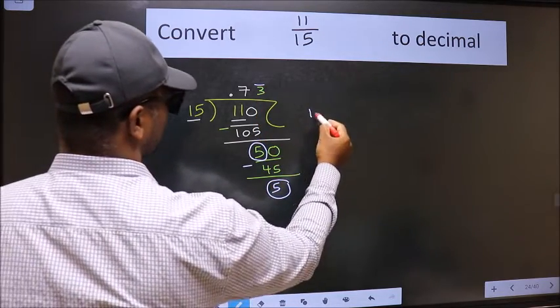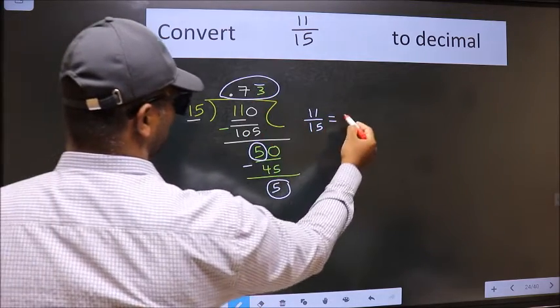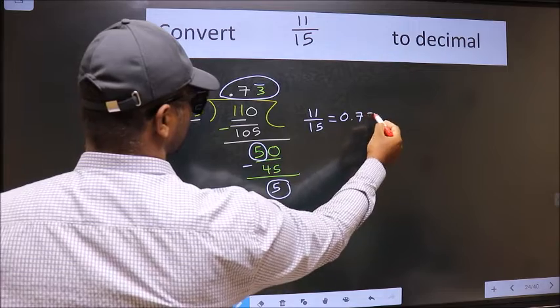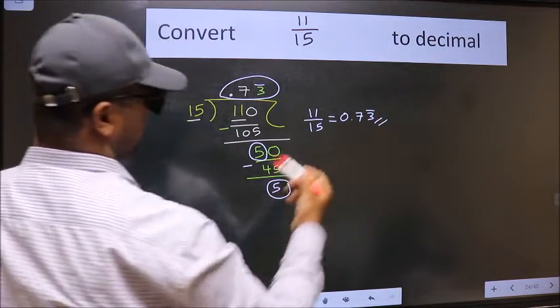Therefore, the decimal of 11 by 15 is 0.73 with a bar on this number. This is our answer.